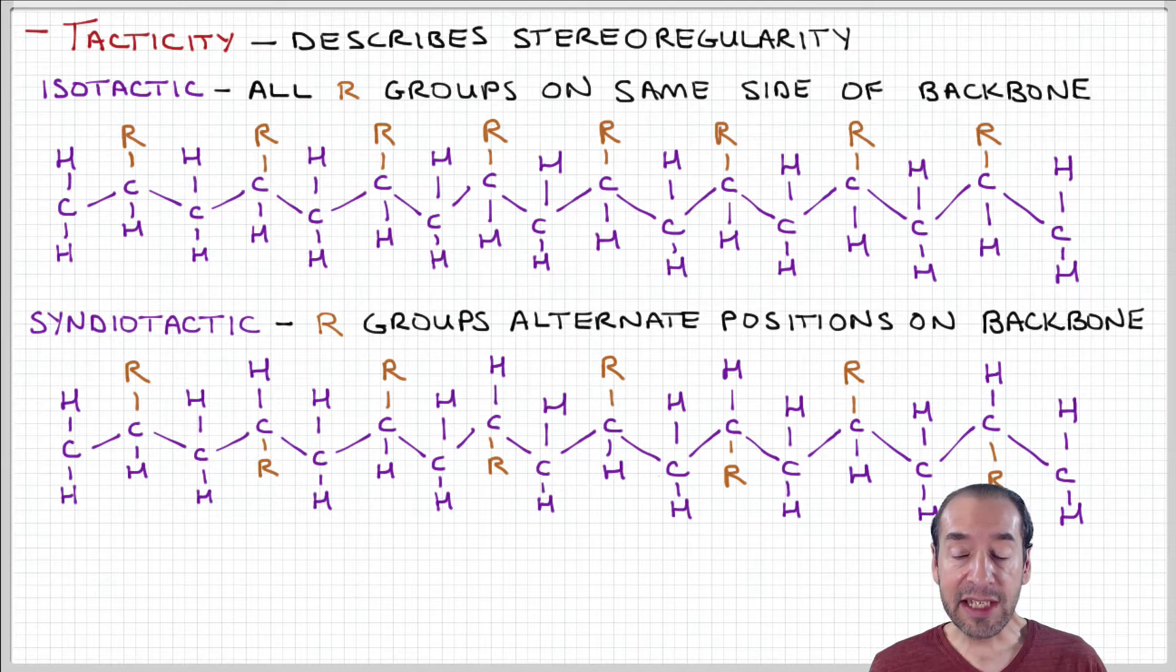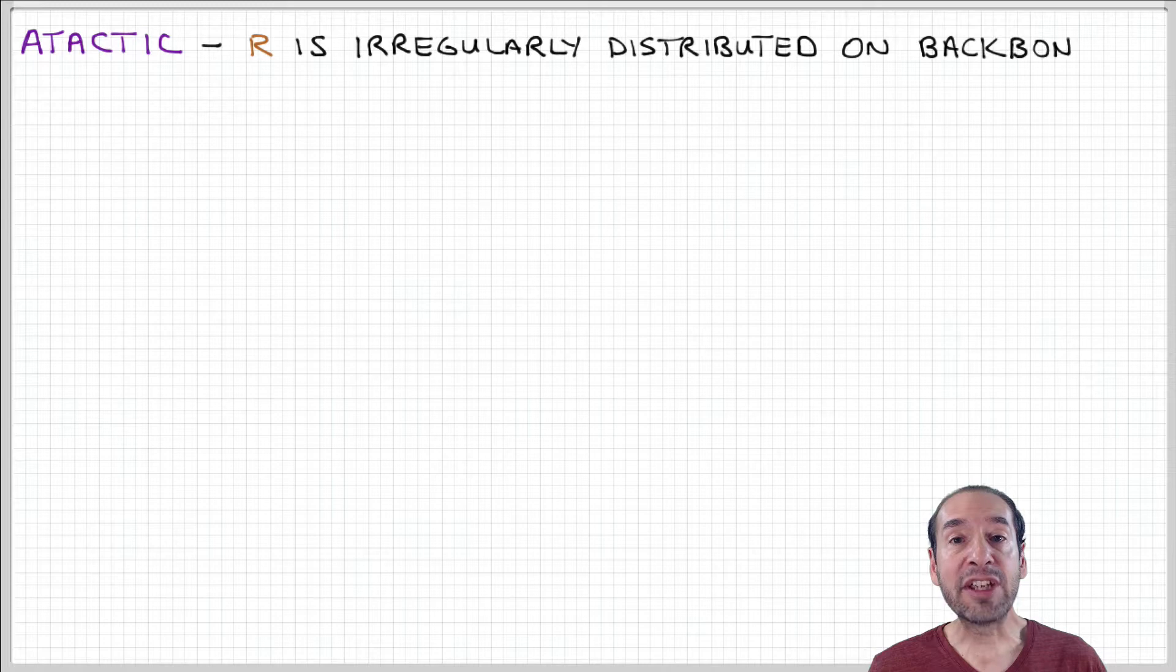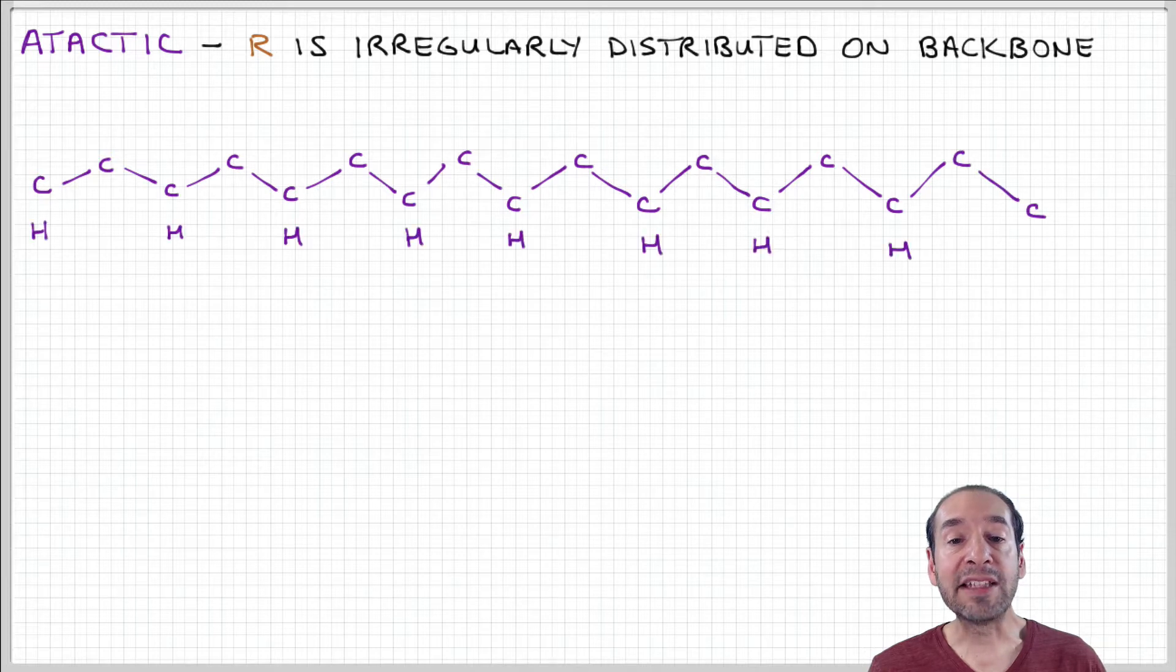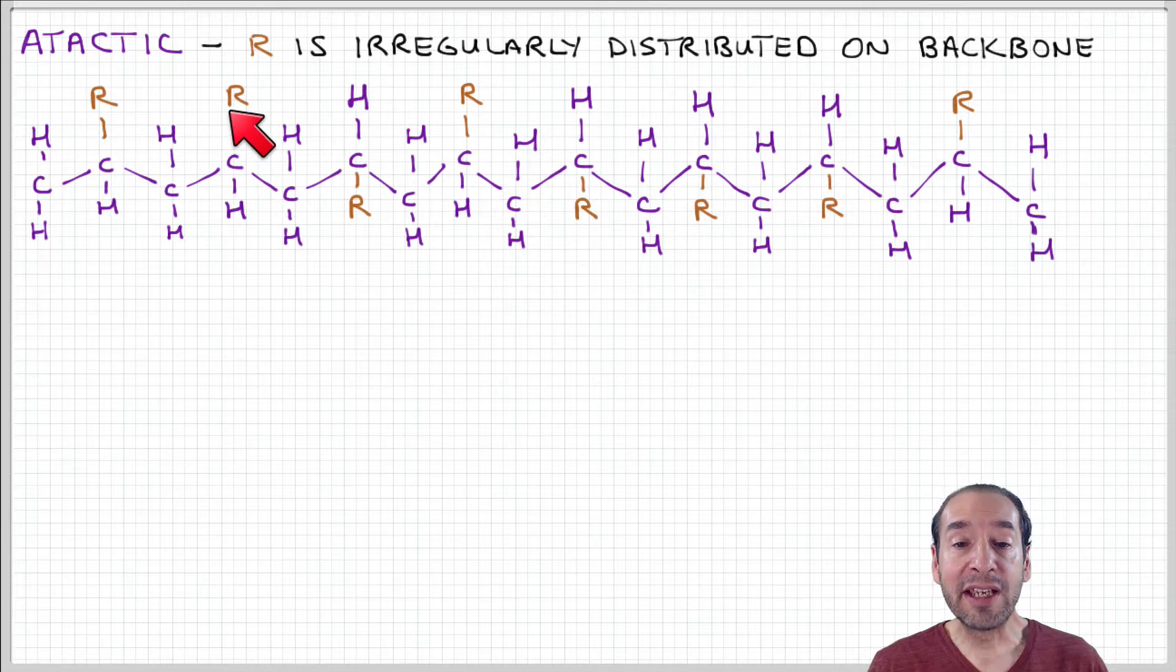Okay, then we already said that these chemical groups don't have to be arranged in a regular manner along the polymer backbone. They can be randomly distributed. And if that's the case, then the material is said to be atactic, or the arrangement is said to be atactic. So we can imagine our polymer chain, and now these side groups are distributed randomly along the backbone. They're on one side for the first two repeat units, then they're on another side, then they're back on the other side, then they're down here for three. So this is said to be an atactic arrangement.